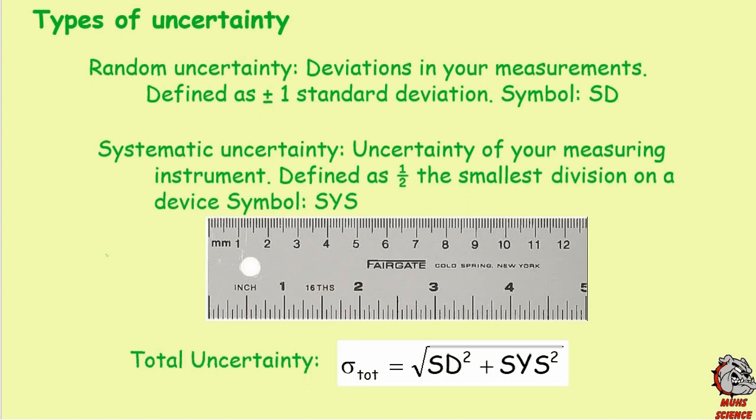When you take measurements, we're going to take five different measurements and do some statistics on them. Any variation in those measurements is called random uncertainty — those are deviations in your particular measurement. The mathematical definition is plus or minus one standard deviation, abbreviated SD. I'll take you through using a calculator and Excel explicitly on how to calculate those.